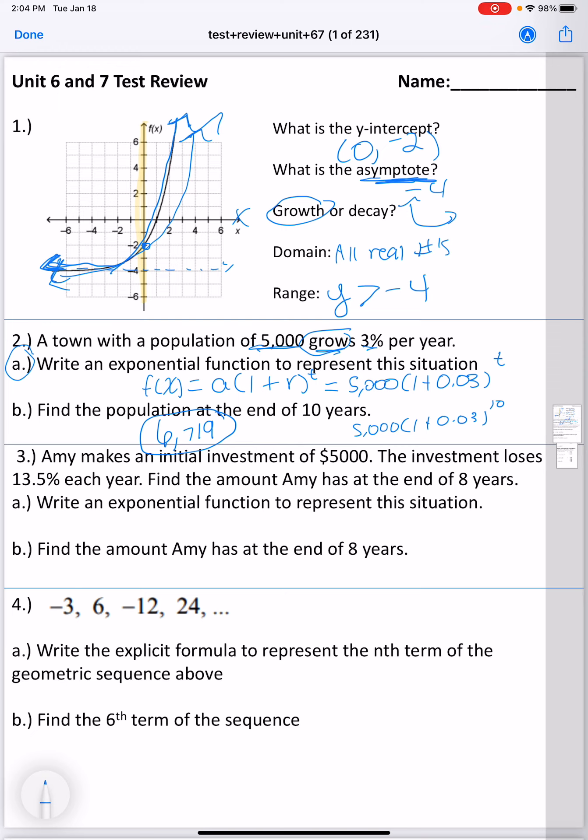The next one is talking about Amy's initial investment of $5,000. She loses money, so we want to use our decay formula, which is a(1 - r)^t. So she starts with 5,000. She's losing 13.5%, so that would be 0.135 for t being general time. The next one, we plug in 8 for time. And now here's how this goes in your calculator. You would do 1 minus 0.135, raise that to the 8th power, and then multiply by 5,000. So at the end of 8 years, she should have $1,567.